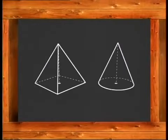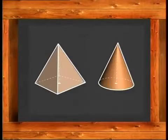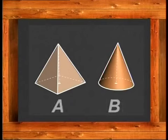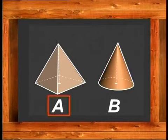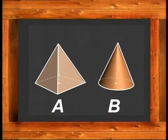Look at the pyramids and cones. In both A and B, the vertex is vertically above the center of the base. Thus, A is called a right pyramid and B is called a right cone.